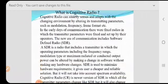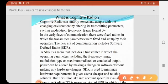What is cognitive radio? Cognitive radio smartly senses and adapts with the changing environment by altering its transmitting parameters such as modulation, frequency, frame format, etc. In the early days or in traditional communication there were fixed radios in which the transmitter parameters were fixed and set up by their operators.